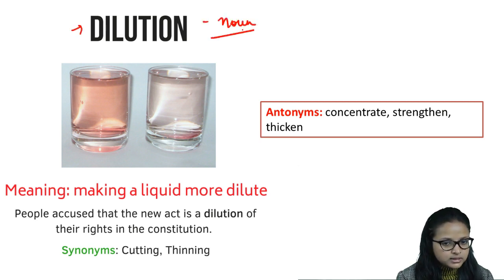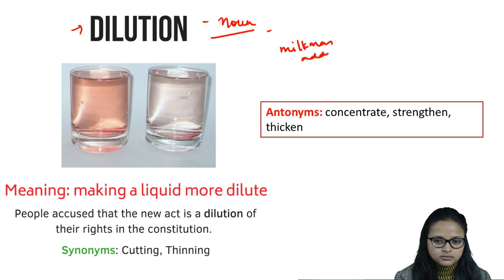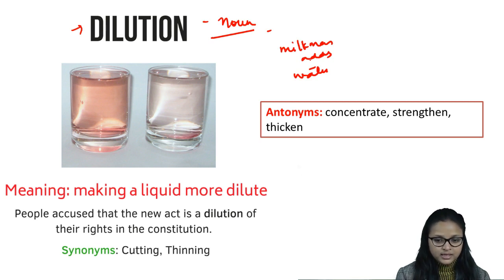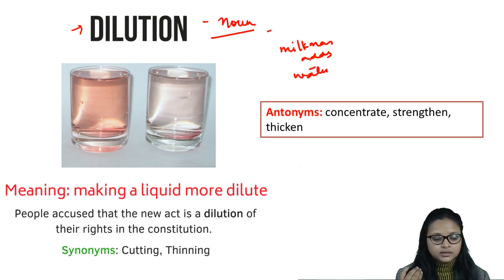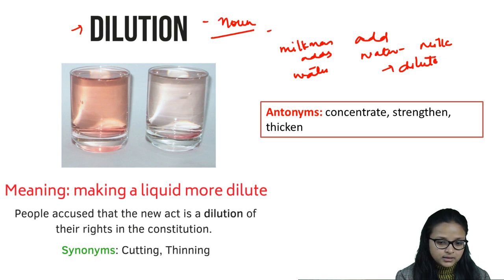What is dilution? Sometimes you see the milkman adds water to the milk, and therefore the milk becomes less thick. That activity is called dilution — when you add liquid to make a liquid more dilute. If you add water to milk, it will become dilute, less thick, or thin.